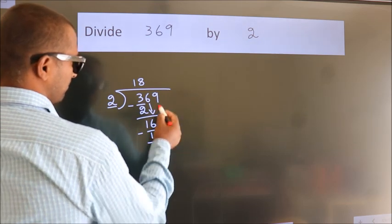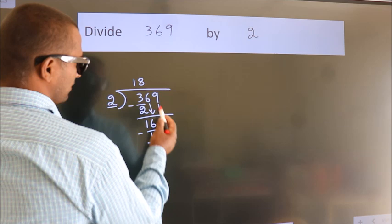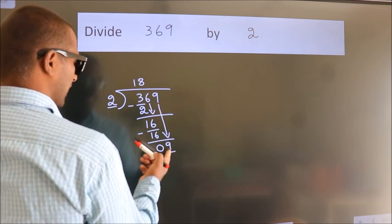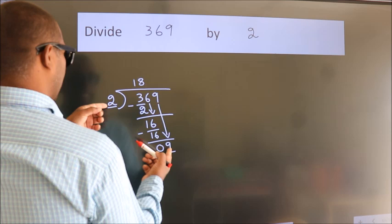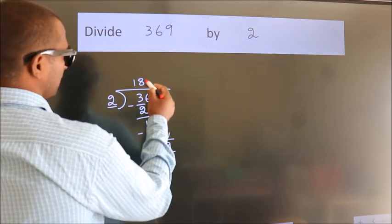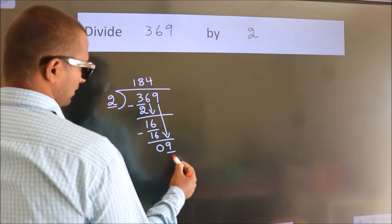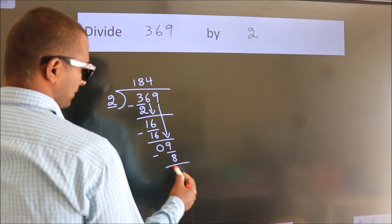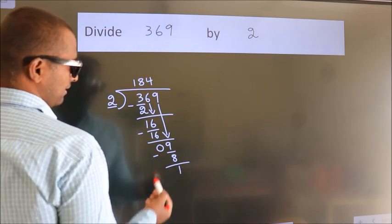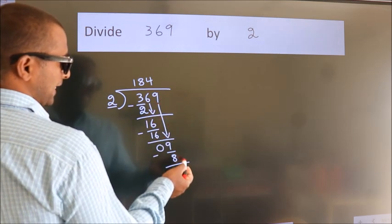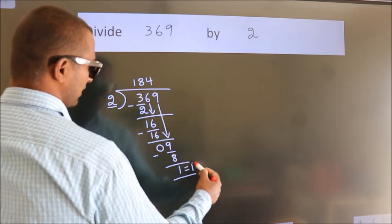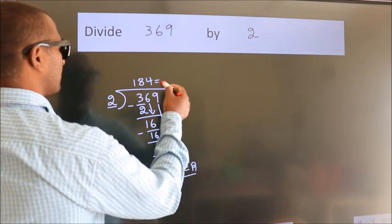So after this, bring down the beside number. So, 9 down. So, 9. A number close to 9 in 2 table is 2 4s, 8. Now, we subtract. We get 1. No more numbers to bring down. So, we stop here. This is our remainder. This is our quotient.